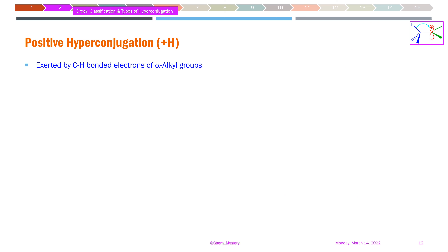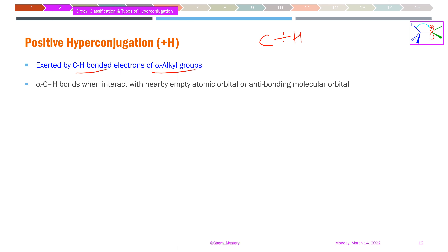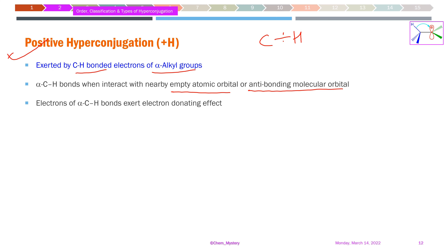Here is an example of positive hyperconjugation. When any alkyl group is present, the alpha C–H bonds are mostly delocalized as a result of hyperconjugation. This delocalization can occur into an empty atomic orbital such as a p orbital, into a singly occupied p orbital, or into an anti-bonding molecular orbital. This electron-donating effect is called the positive hyperconjugation or +H effect.